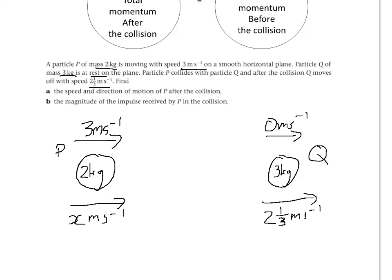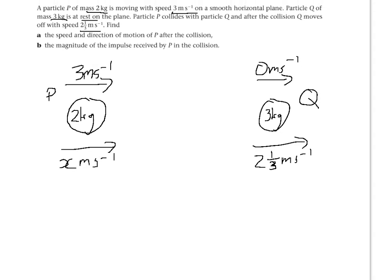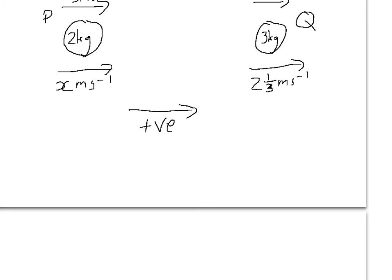Now, we can move on to answering the question which is to find the speed of P after the collision. As I said earlier on, we need to identify which direction we're going to take as positive. So I'm going to take this direction as the positive direction. So any speed in that direction will take as positive. Any in the other direction as negative. First, write down the equation we have written down earlier on. M1V1 plus M2V2 is equal to M1U1 plus M2U2.